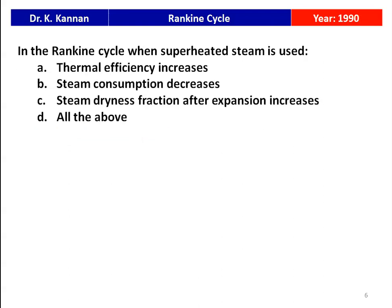The next question from the 1990 question paper: in a Rankine cycle, when superheated steam is used — thermal efficiency is increasing, steam consumption decreases, steam dryness fraction after expansion increases, or all the above? When superheated steam with higher temperature is admitted into the turbine, all three are true: thermal efficiency will increase, steam consumption will decrease, and the dryness fraction at the turbine outlet will also increase. So the answer is all the above.